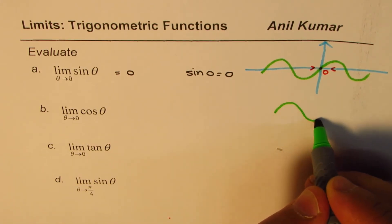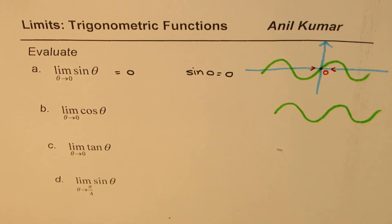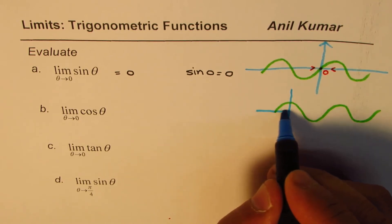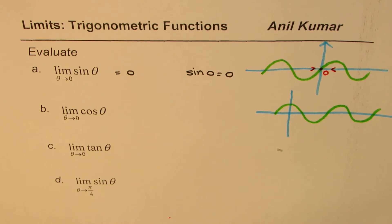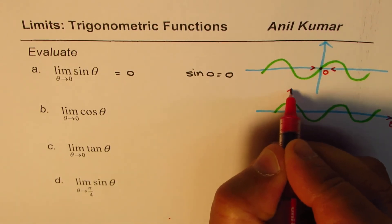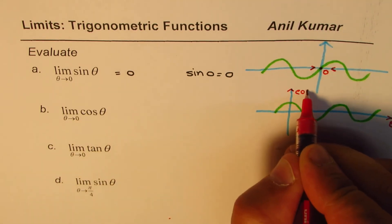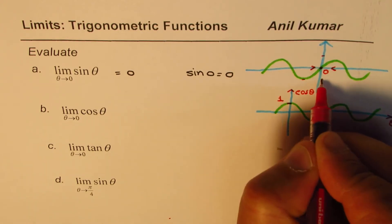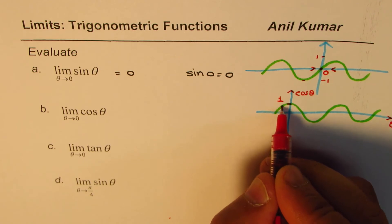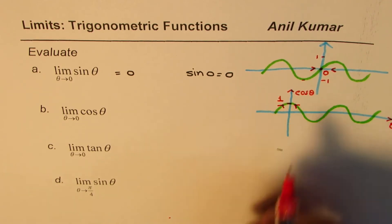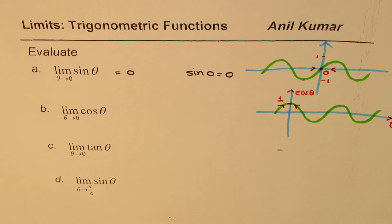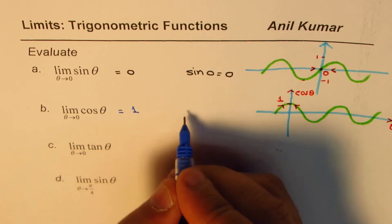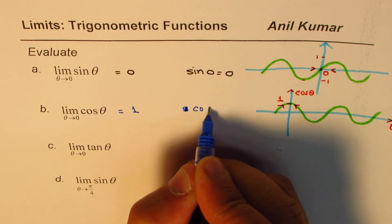I'll draw a similar wave, but the cosine function starts with 1. Let this be my y-axis and this be the θ-axis. The function is cosine θ. As you approach 0, the value approaches 1 — this is between plus and minus 1. Whether you are approaching from the left side or from the right side, the value you approach is 1. Therefore, the limit of cosine θ as θ approaches 0 is 1.